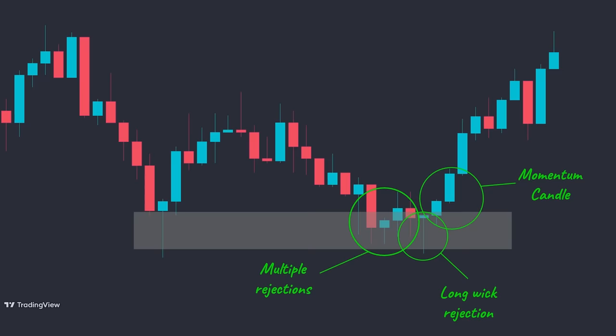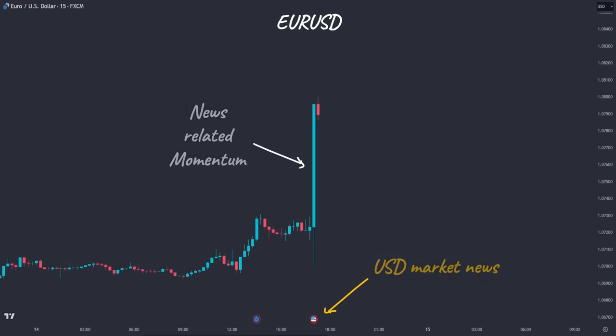Here is a pro tip: in the bullish scenario, if the second candle has no wick on top, it indicates that the buying pressure was present until the end of the candle, which is another sign that the price will continue pushing higher. The same for the bearish scenario — the absence of a wick at the bottom of the momentum candle signals massive selling pressure. When important news comes out in the forex market and other price charts, it can cause sudden and big momentum candlesticks regardless of the technical situation, so it's smart for traders to stay informed about upcoming economic news.